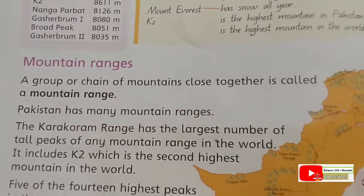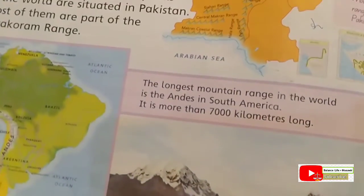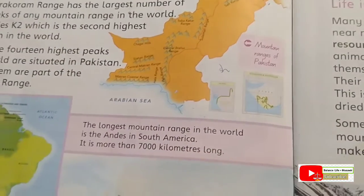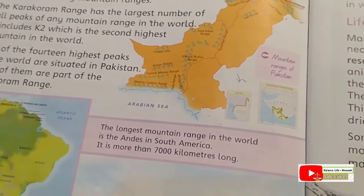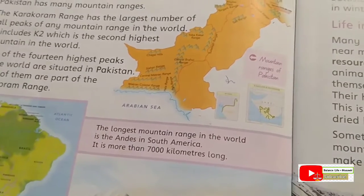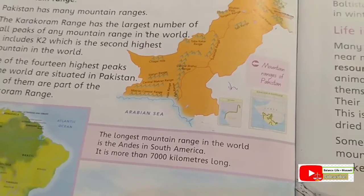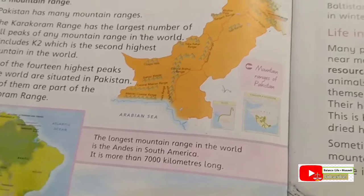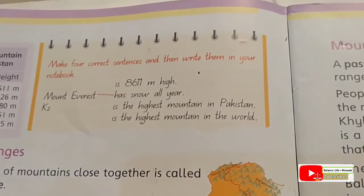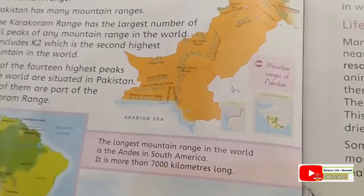How do you define a mountain range? A group or chain of mountains close together is called a mountain range. Pakistan has many mountain ranges. The Karakoram range has the largest number of tall peaks of any mountain range in the world — it includes K2. K2 is the highest mountain in Pakistan and the second highest mountain in the world.